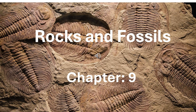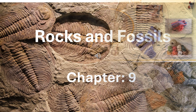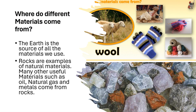Rocks and Fossils, Chapter 9. Where do different materials come from? The earth is the source of all the materials we use. Rocks are examples of natural materials. Many other useful materials such as oil, natural gas, and metals come from rocks.